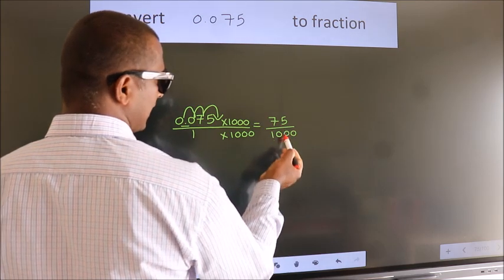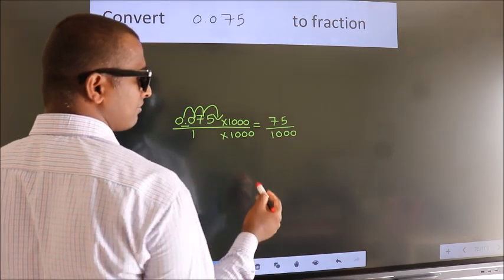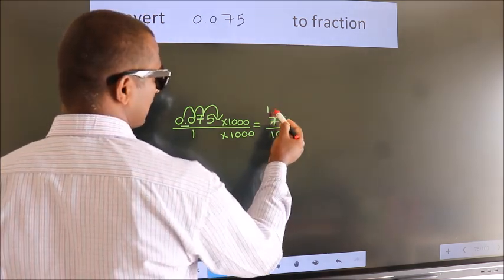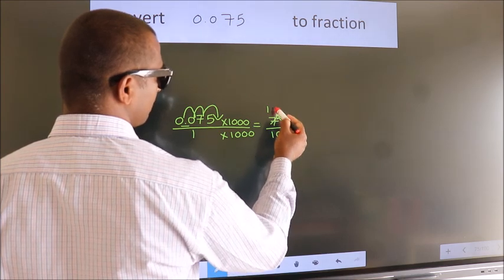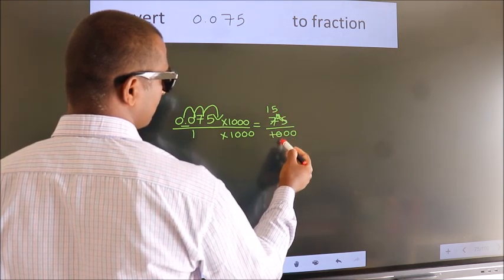I now cancel with 5. 5 1s, 5 5s, 5 2s, this 0s as it is down.